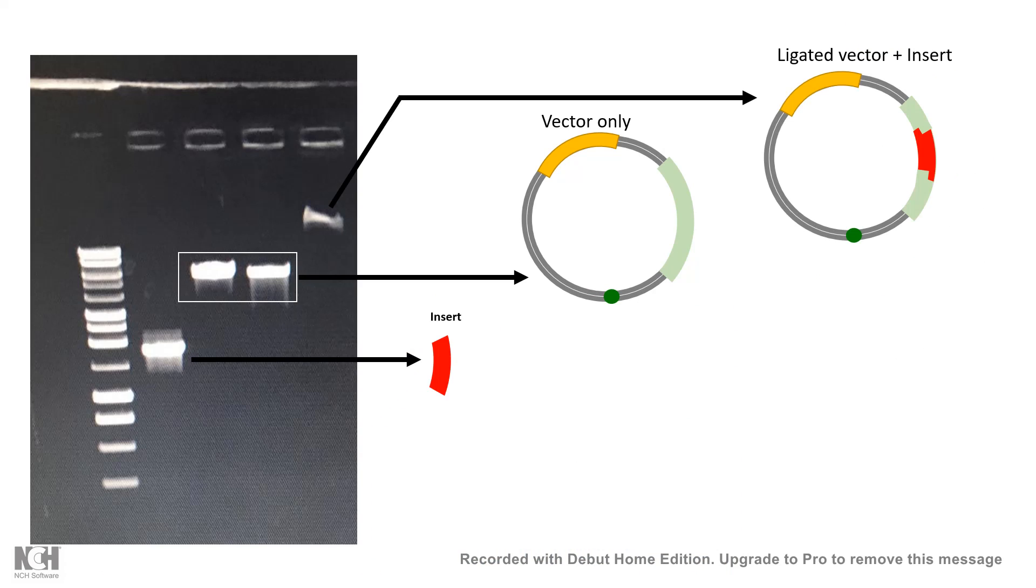In this example, the first lane has an insert and the vector. The restriction-digested vector is coming at a shifted location because it is bigger than the insert.